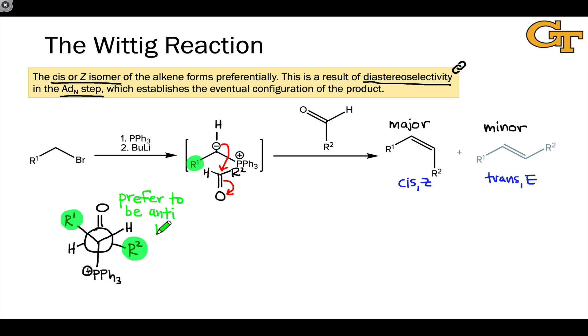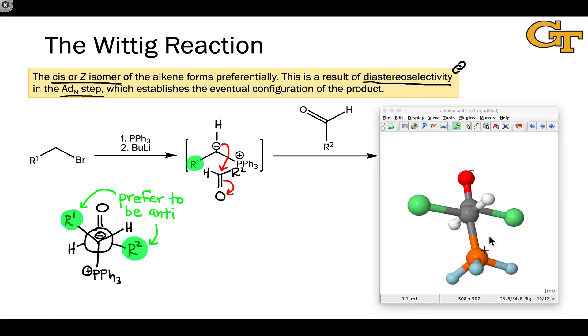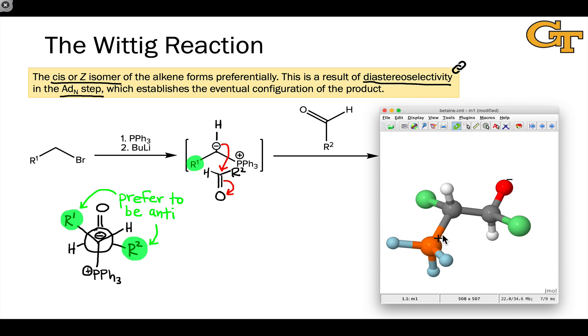Here's a three-dimensional model that shows the result of this addition process with the large R1 and R2 groups in anti-positions. Notice that we've created two stereocenters in this intermediate with positive and negative charges.